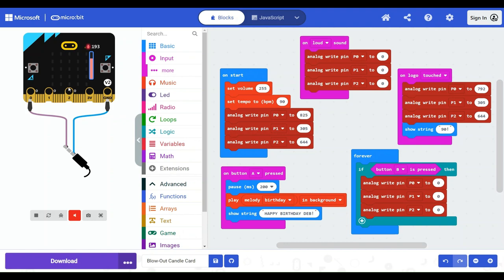So how do we turn them on again? Well, we have another input. This is the on logo touch. The logo is this little metal design here. And on your actual board, when you touch it with your finger, that's enough to make it turn on. With the simulation, you need to click on it and this should turn the lights back on. It's also going to show the number 90 and exclamation point because this is the program I wrote for my mother's 90th birthday card.